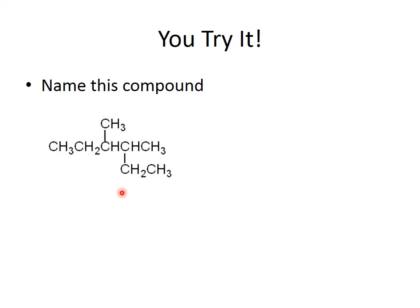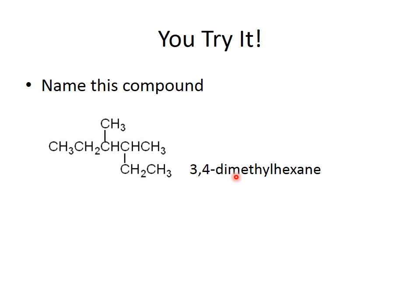Go ahead and look at this molecule and try to name it — pause the lecture and then restart. The name is 3,4-dimethylhexane. Find the longest chain: one, two, three, four, five, six — hexane. You can number it from either end and get the same result. There are two methyl substituents, one on carbon three and one on carbon four. So the name is 3,4-dimethylhexane.